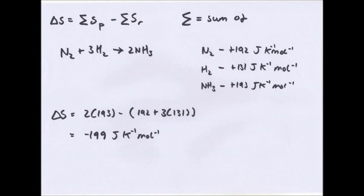Delta S therefore equals, now the NH3 is the product, so 193 times 2, because there are two moles of NH3, minus 192, the entropy of N2, one mole of that, plus 131, the entropy of hydrogen times by 3, because there are three moles of hydrogen. Overall, there is minus 199 joules per Kelvin per mole. That's the entropy, now that's negative, so it's becoming more ordered, and we said it would become more ordered because there's less gas being formed.